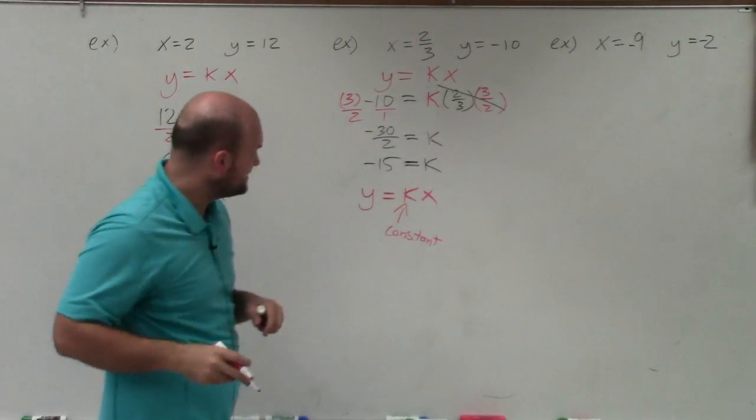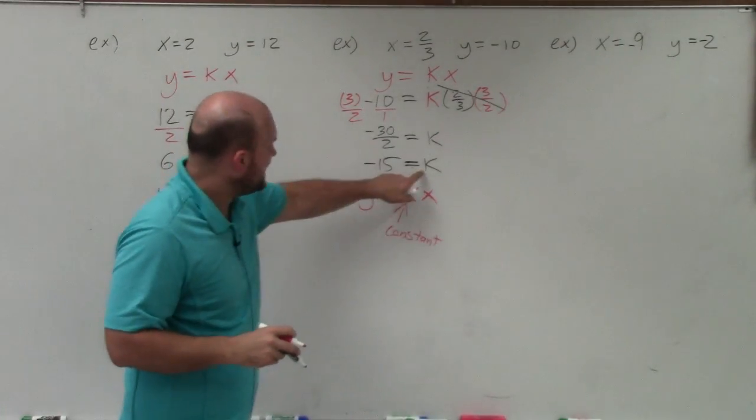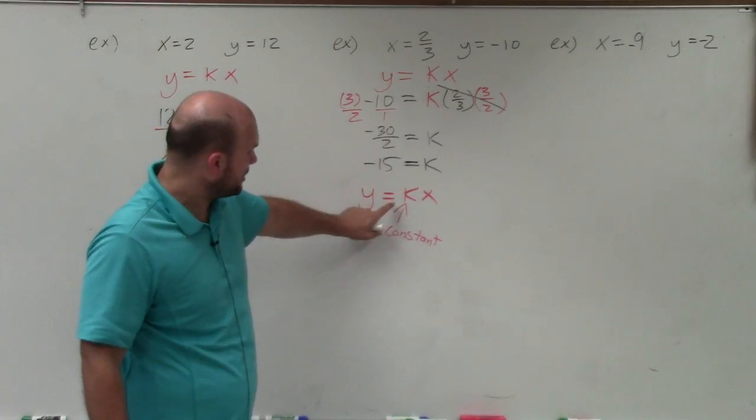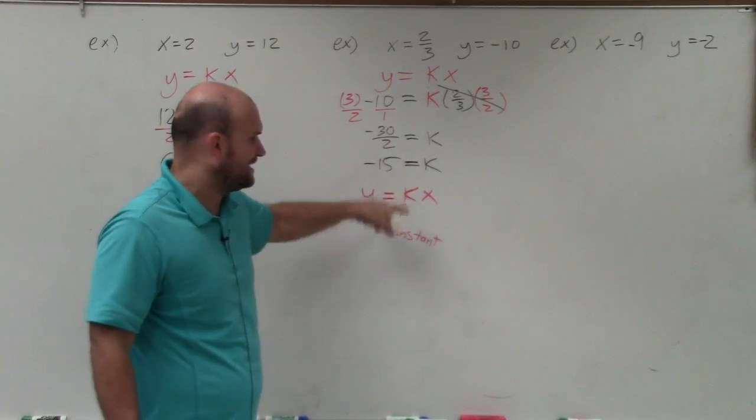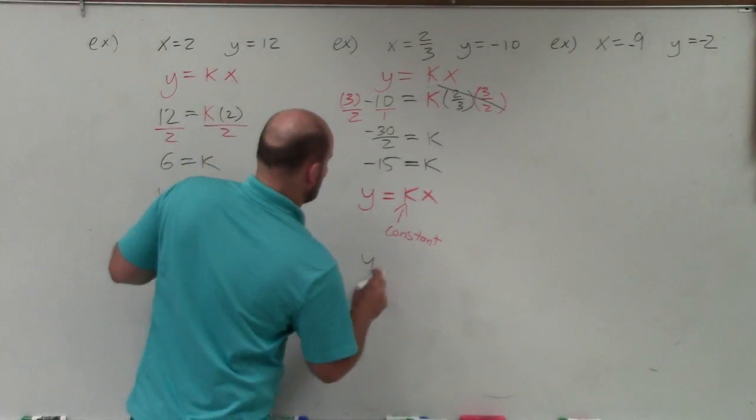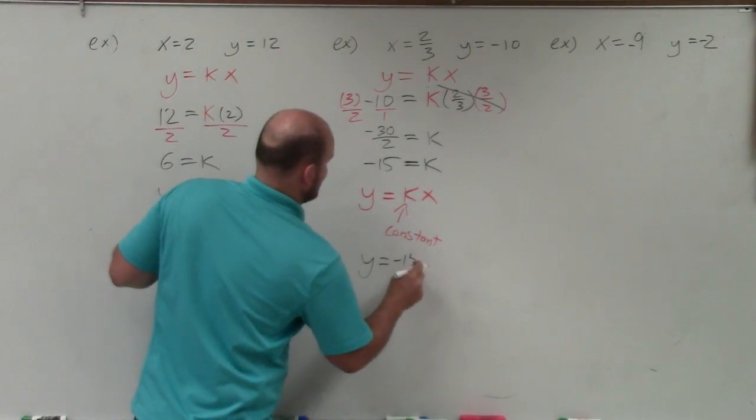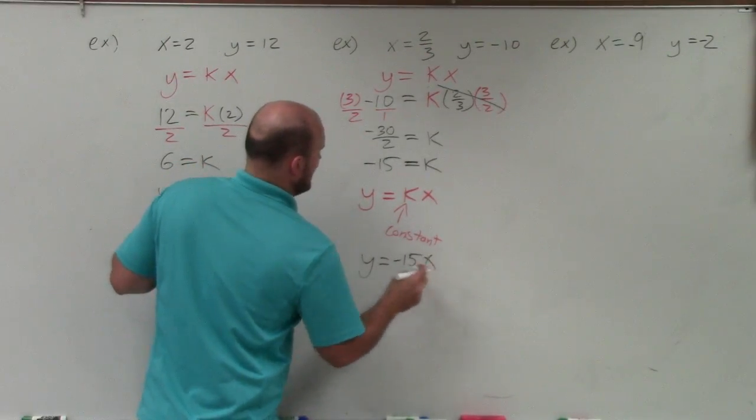That multiplies to 1 equals k. This can be reduced to negative 15 equals k. So my constant is going to be negative 15. Now, to rewrite that in direct variation form, I have my constant. And I want to write it for any values of y and x with that constant. So it's going to be y equals negative 15x.